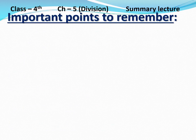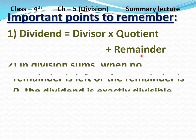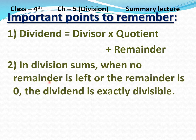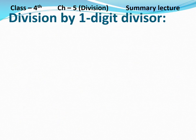Now, some important points to remember. Number 1: There is a formula to check a division sum — Dividend equals divisor multiplied by quotient plus remainder. Number 2: In division sums, when no remainder is left or the remainder is 0, the dividend is exactly divisible. Number 3: The remainder is always less than the divisor.